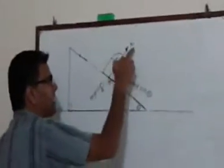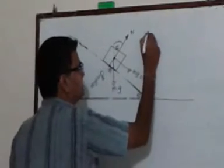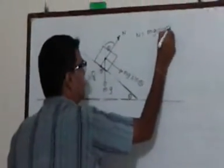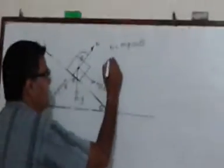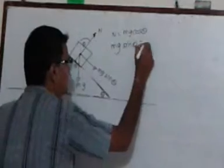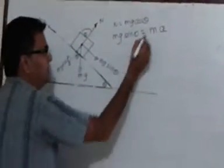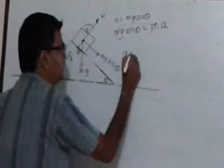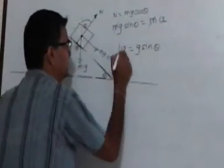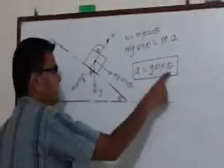As the block is not moving perpendicular to the surface, there is equilibrium in that direction, so N must balance mg cosθ. The force that supplies the necessary acceleration in the downward direction along the incline is mg sinθ. Therefore, mg sinθ = ma, which gives the acceleration as g sinθ. This is the situation where the wedge is fixed and the block slides down with acceleration g sinθ.